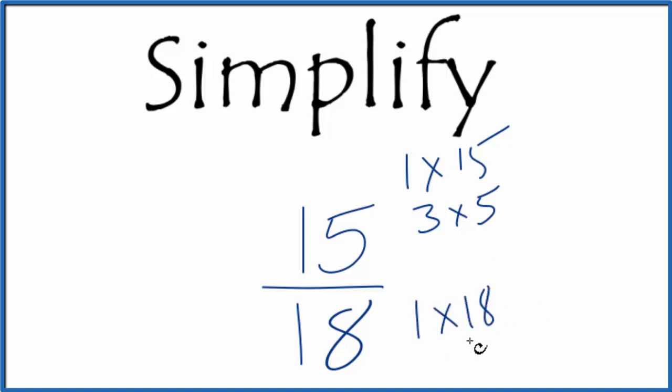18, we'd have 1 times 18, 2 times 9, 3 times 6, that's pretty much it.